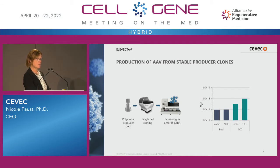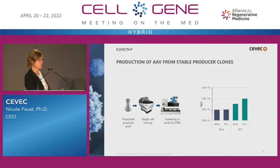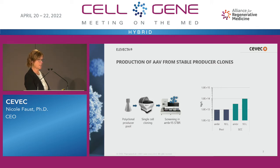We start with the polyclonal population, then go through single-cell cloning using a cell printer with image-based verification of clonality. We do initial screening in multi-well plates, and from there take the top clones to an EMBER-15 system that gives us a good indication of which clones will be good producers. We then scale directly up to 10 liters with no intermediate steps, and one example clone yielded 10^14 vg per liter at 10-liter scale.